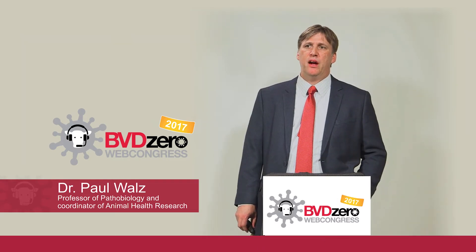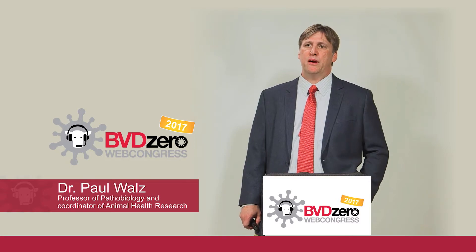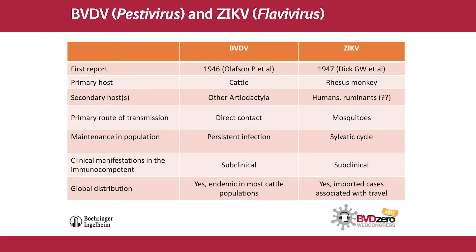Let's get into more discussion of BVD virus, the Pestivirus, and Zika virus, the Flavivirus. Both of these viruses were discovered in the 1940s. Olufsen in 1946 and Childs in 1946 both described BVD virus simultaneously in the United States and Canada. The Zika virus was first reported in the early 1950s, based upon an infection that occurred in 1947. That first report involved recognition of an infection in the Zika forest, located in Central Africa near Uganda. The Zika forest is only a 60-acre forest but has the greatest biodiversity of mosquito populations in the world.